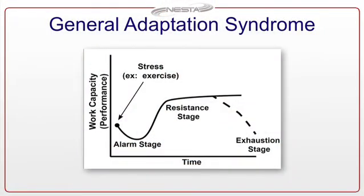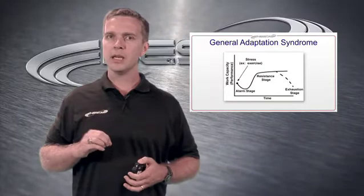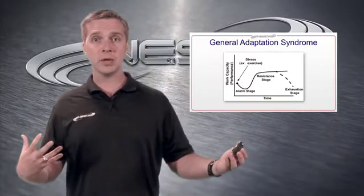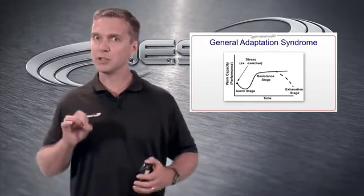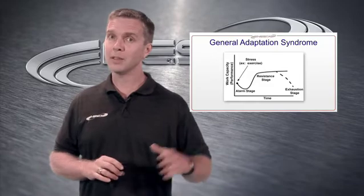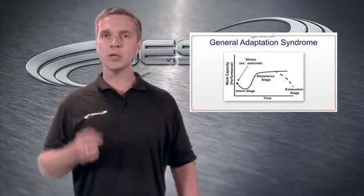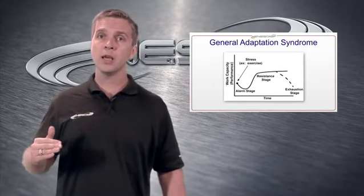How does that happen? Take a step back. There's a physician named Hans Selye who created what's called the GAS theory, or General Adaptation Syndrome. At any moment in time, a person is capable of a certain level of performance — we'll call that work capacity. If you put a stress on the body, initially performance is going to go down, whether it's a good stress or a bad stress. Hopefully, when done right, exercise should be a good stress. No matter what, initially work capacity is going to go down — that's called the alarm stage.